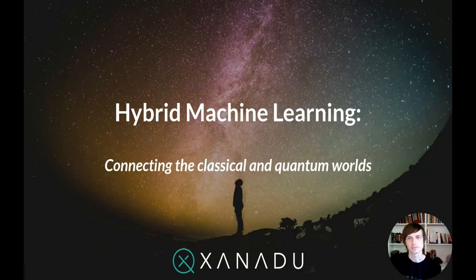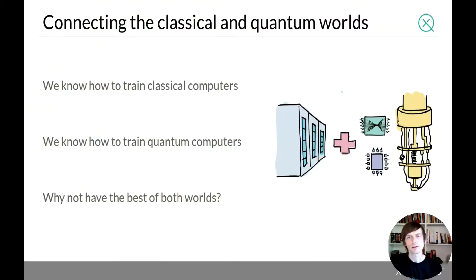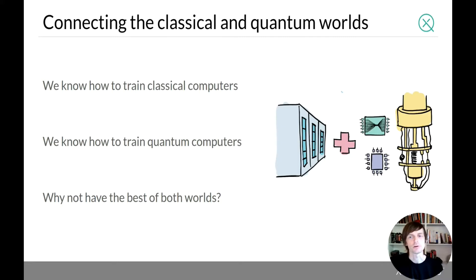Our final topic of this series is hybrid machine learning models, or how we can connect the quantum and classical worlds together. We know how to train classical computers — the tools of deep learning have given us lots of power. We also know how to train quantum computers, and in fact it's usually the exact same tools we can use. So why can't we put them both together and have the best of both worlds?